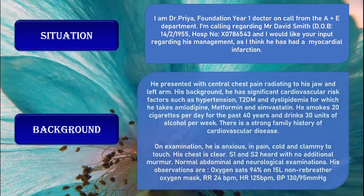He presented with central chest pain radiating to his jaw and left arm. His background: he has significant cardiovascular risk factors such as hypertension, Type 2 diabetes mellitus, and dyslipidemia, for which he takes amlodipine, metformin, and simvastatin. He smokes 20 cigarettes per day for the past 40 years and drinks 30 units of alcohol per week. There is a strong family history of cardiovascular disease as well.